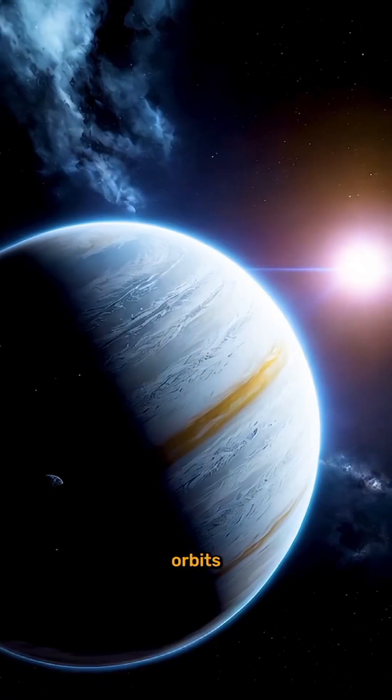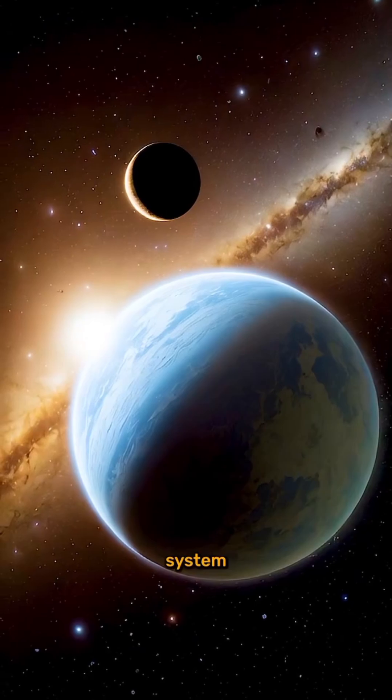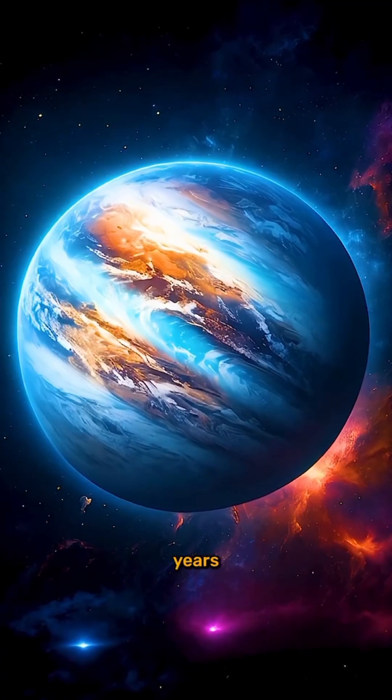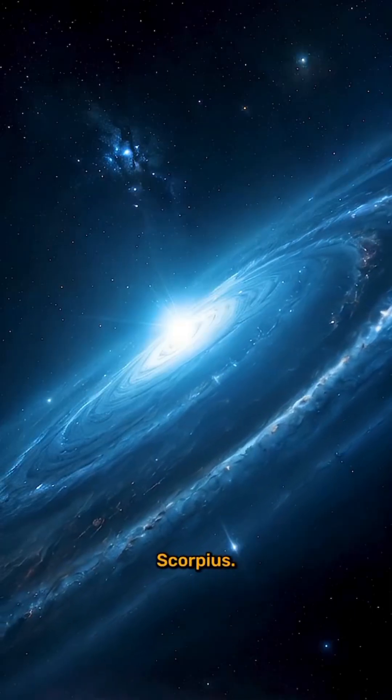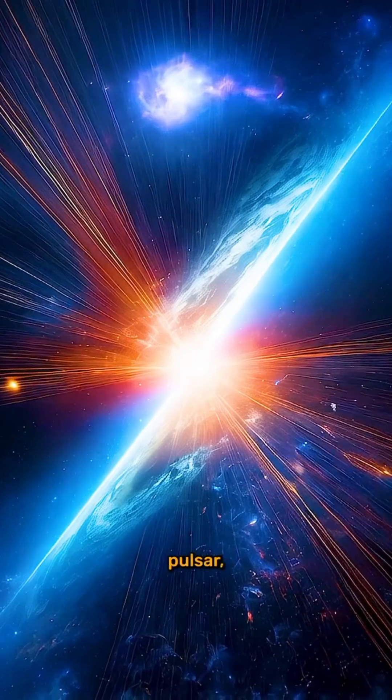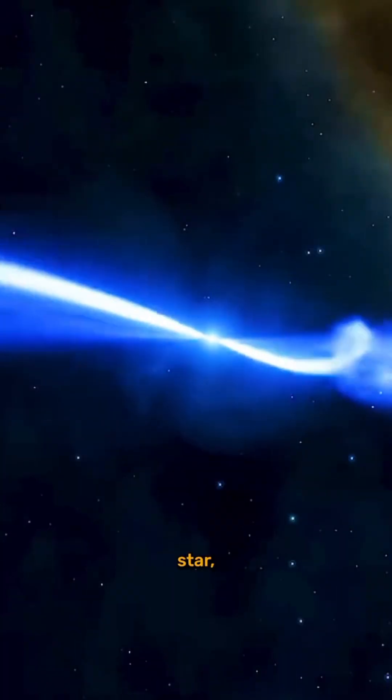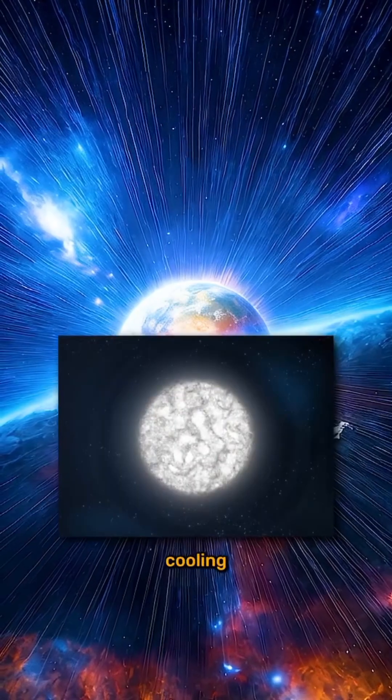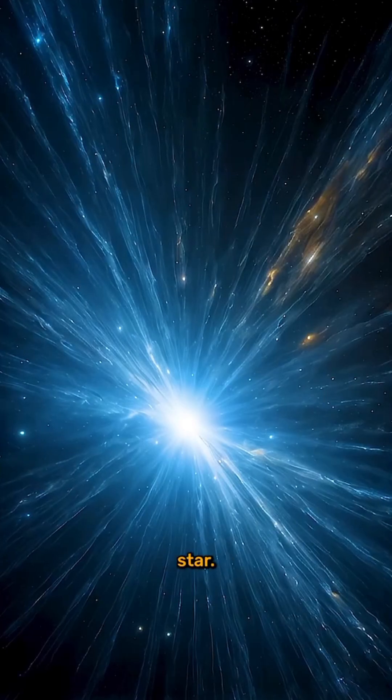This ancient world orbits a unique binary star system located about 12,400 light years away in the constellation Scorpius. The system consists of a pulsar, a rapidly spinning neutron star, and a white dwarf, the cooling core of a once massive star.